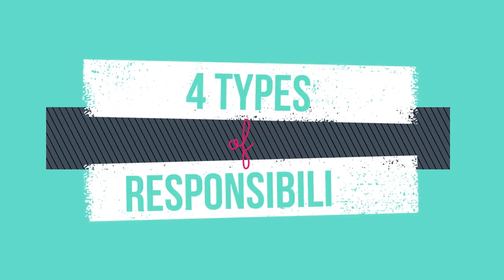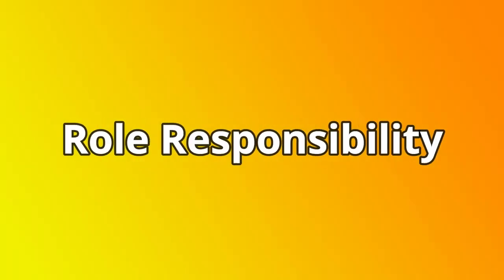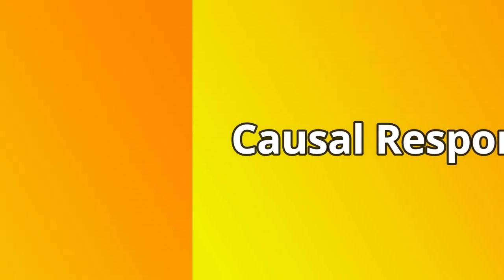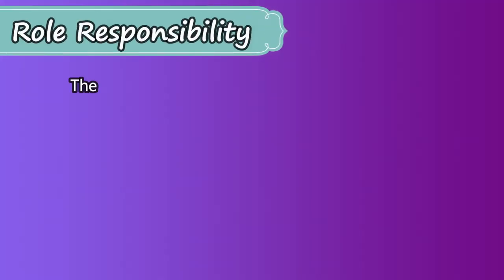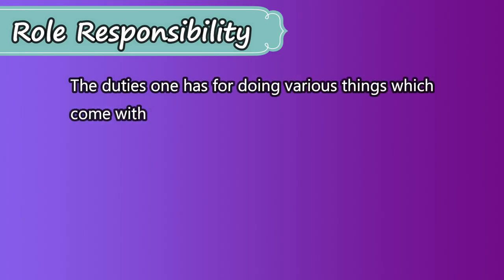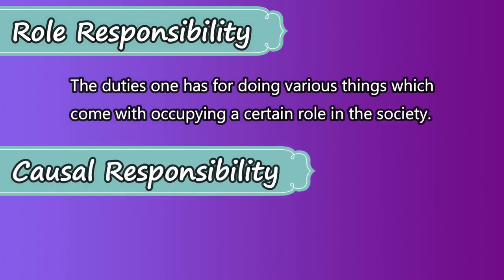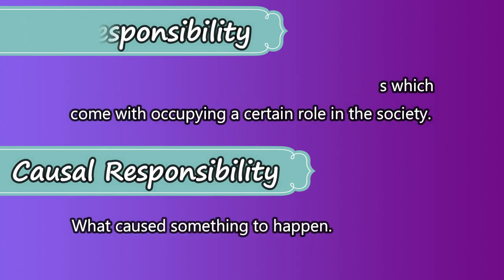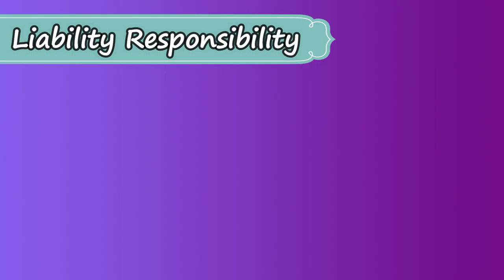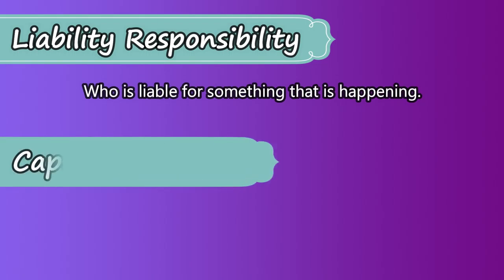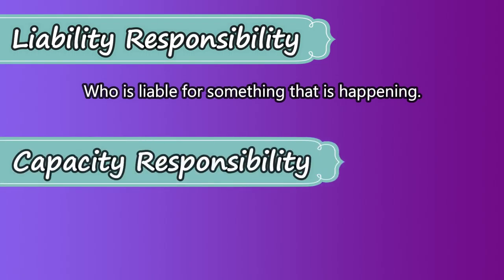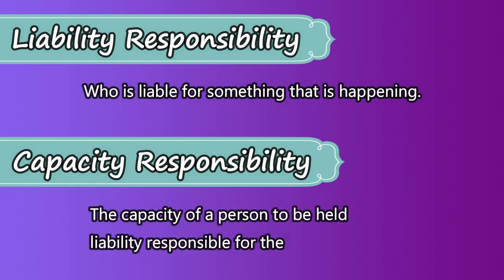There are four types of responsibility: role responsibility, causal responsibility, liability responsibility, and capacity responsibility. Role responsibility refers to the duties one has for doing various things which come with occupying a certain role in society. Causal responsibility is what causes something to happen. Liability responsibility is who is liable for something that is happening. Capacity responsibility is the capacity of a person to be held liability responsible for their actions.